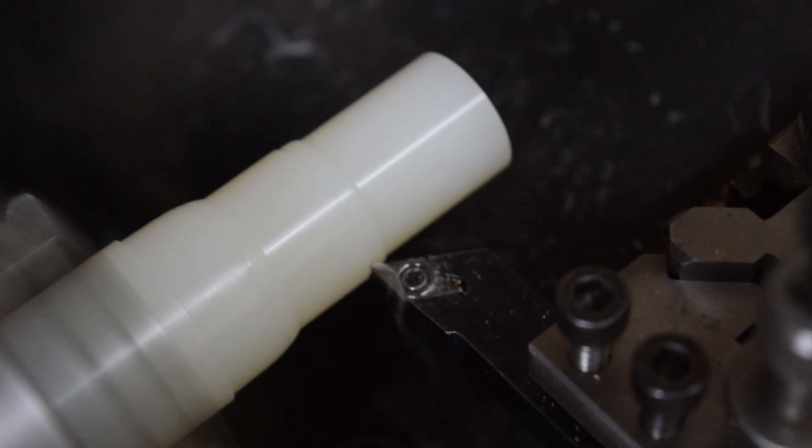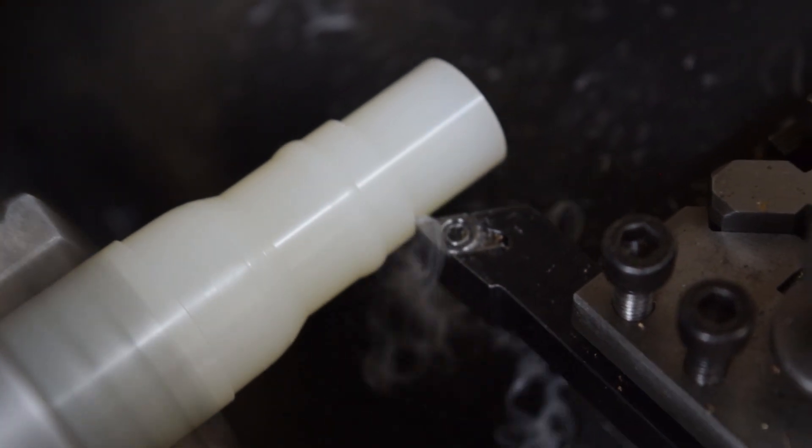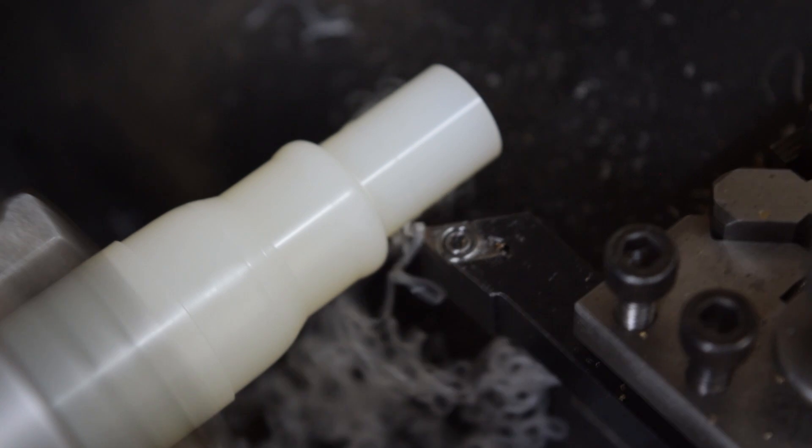The spindle is turning at around 1000 RPM with a feed around 5 inches per minute.